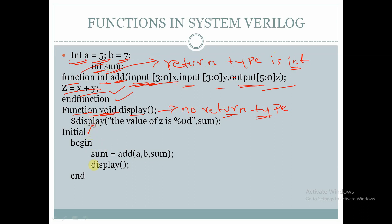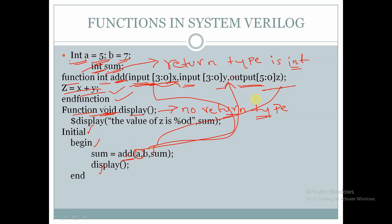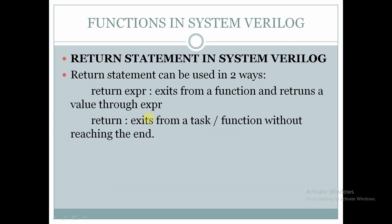Within an initial begin block we are calling the function 'add' and passing arguments: a is copied to x, b is copied to y, and sum is copied to z. So z = x + y, meaning sum = a + b. Then we call the void function 'display', which will display the value of z, which is the value of sum.